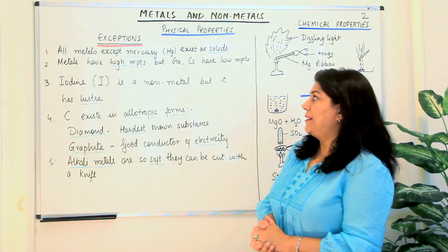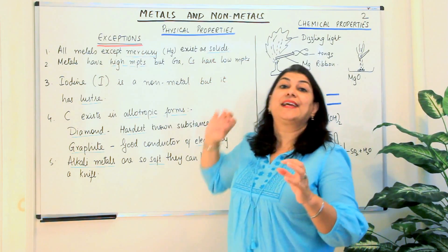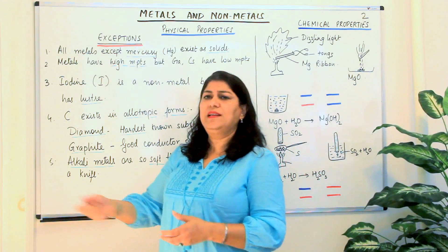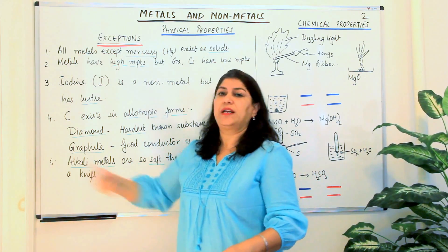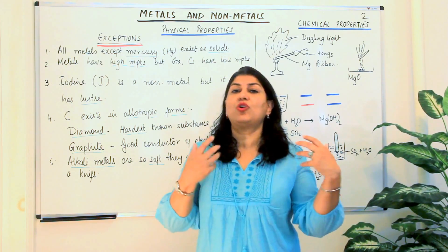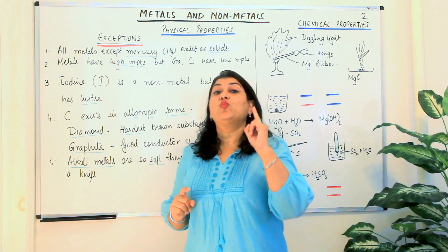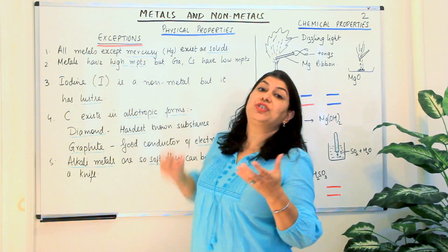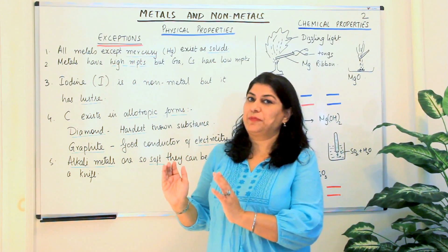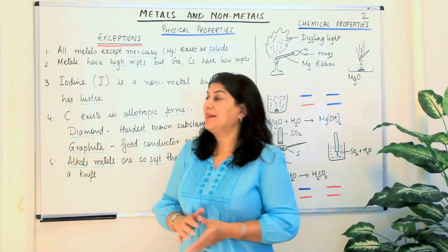We start with the study of exceptions. We say that all metals exist as solids — an iron rod, an aluminum foil, gold, silver — metals bring solids to mind. But there is one metal, mercury, which is a liquid. So that is an exception; it is not following the regular physical properties of metals.